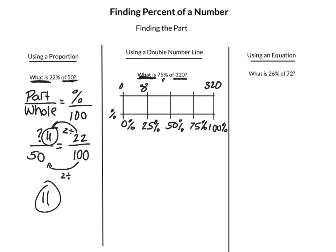So 320 divided by 4 is 80, because 32 divided by 4 is 8. So we're going to skip count by 80s: 0, 80, 160, 240, 320. Now what we do is we look for that 75 percent and see that it matches up with 240. So what is 75 percent of 320? That answer is 240.